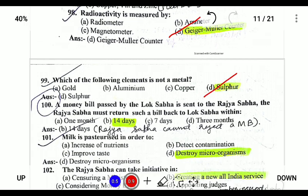Which of the following elements is not a metal? Silver is a non-metal. For the last question: a money bill passed in the Lok Sabha is sent to the Rajya Sabha. The Rajya Sabha must return the bill within 14 days. The Rajya Sabha is bound to return the money bill because it does not have any power over a money bill. The Lok Sabha can accept or reject the suggestions made by the Rajya Sabha.